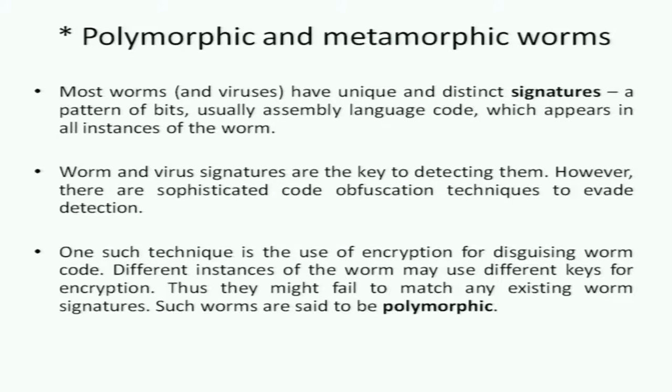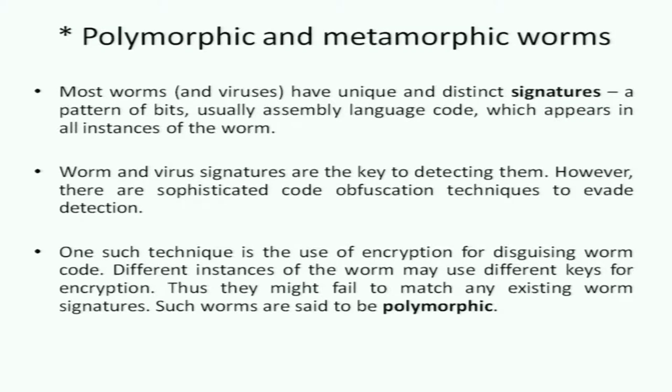About 15 years ago, polymorphic and metamorphic worms were unleashed. The earliest antivirus products worked by looking at payloads of typical network packets and examining a sequence of bits — the signature for a particular worm. Worm writers got smart and decided to dodge antivirus software, coming up with polymorphic and metamorphic worms. Most worms and viruses have unique and distinct signatures — typically a pattern of bits, usually assembly language code.